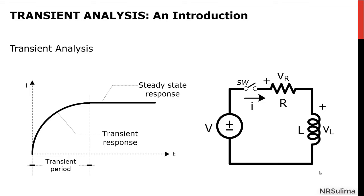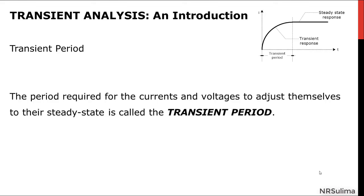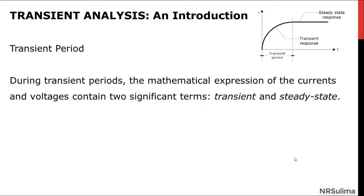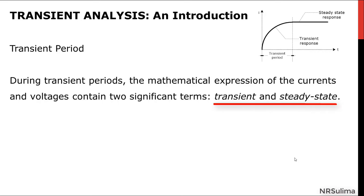Before a circuit attains its steady state, the circuit passes through a transition period in which the currents and voltages are not recurring periodic functions of time. The period required for the currents and voltages to adjust themselves to their steady state is called the transient period. During transient periods, the mathematical expression of the currents and voltages contain two significant terms: transient and steady state.